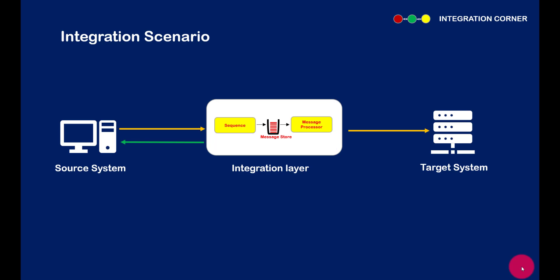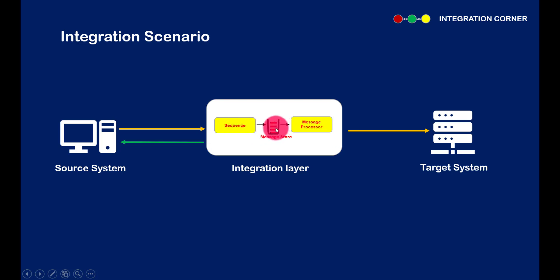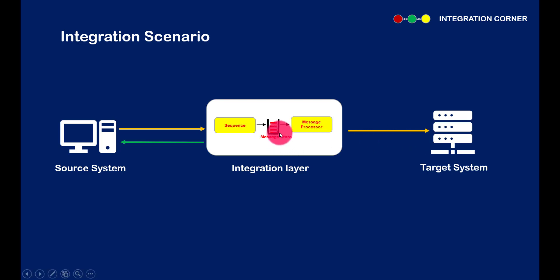In this integration scenario, a source system sends a message to an integration layer, which is then supposed to go to the target. With a message store and message processor in place, the integration layer receives the request from the source system, writes the message into a temporary store — the message store, or a queue — and then acknowledges receipt back to the source system so that the session is closed. The target system can then process these messages at its own pace. The message processor reads messages from the message store and forwards them to the target system.